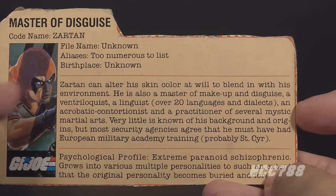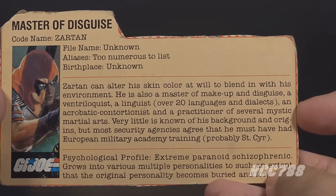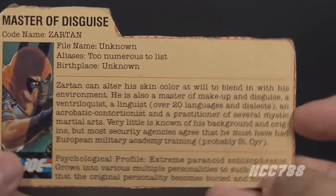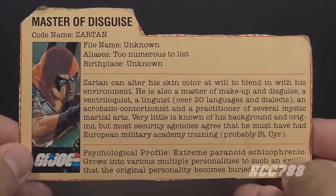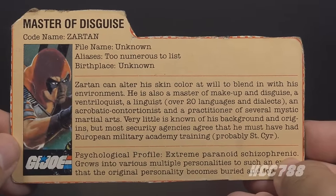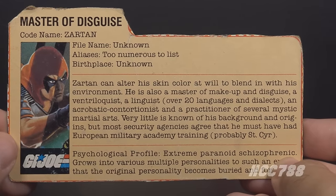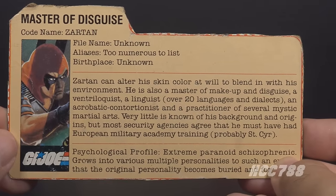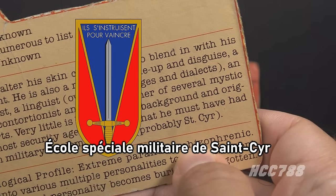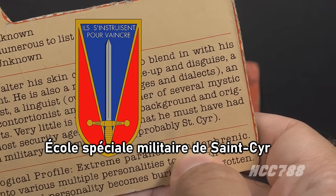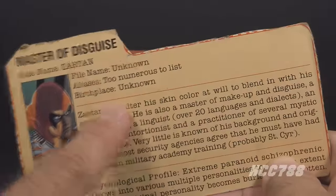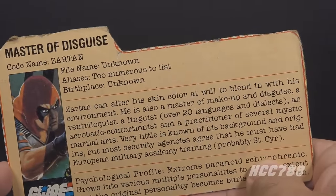The first paragraph has some general information about Zartan. It says Zartan can alter his skin color at will to blend in with his environment. Larry Hama has confirmed that he is a mutant, adding a supervillain-style science fiction element to G.I. Joe all the way back in 1984. He is also a master of makeup and disguise, a ventriloquist, a linguist — over 20 languages and dialects — an acrobatic contortionist, and a practitioner of several mystic martial arts. Very little is known about his background, but most security agencies agree he must have had European military academy training, probably Saint-Cyr. This implies that Zartan is French — his accent in the animated series is kind of vague, so he could be.